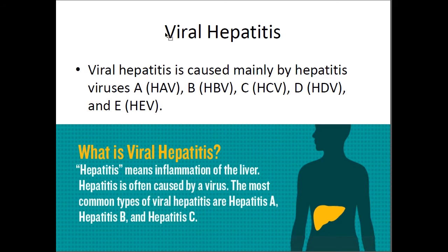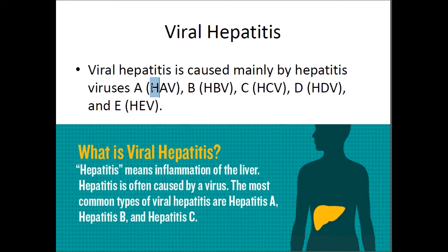Let's go to viral hepatitis. Viral hepatitis is caused by viruses — different kinds of viruses that cause the same problems, but the viruses are different. So they are named by the virus name: virus A, virus B, virus C, virus E. So the first 'H' is hepatitis, 'A' means virus A, 'V' is virus. So the names are HAV, HBV, HCV — same pattern.